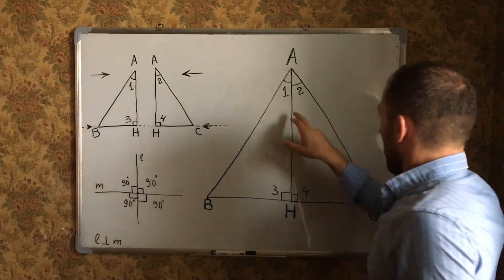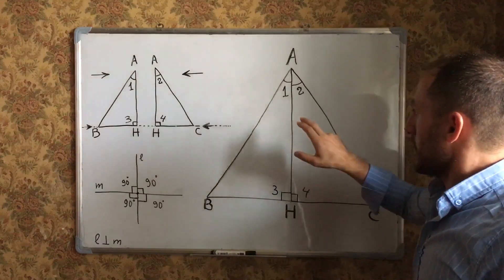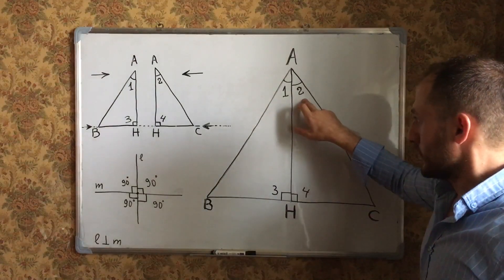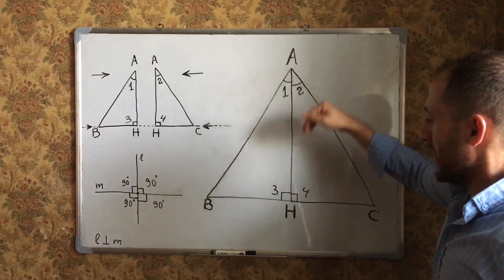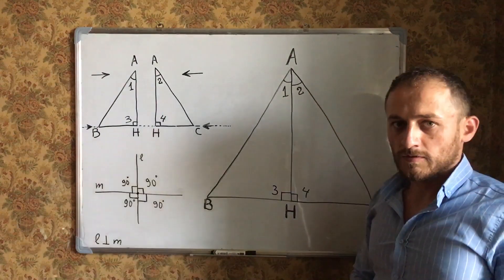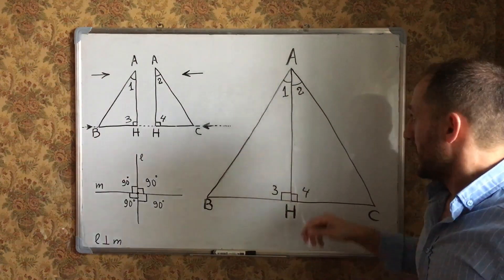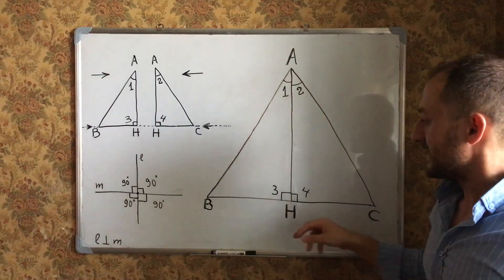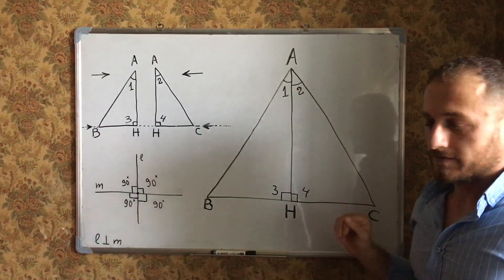Look, given angle 1 congruent to angle 2, and AH is an altitude. I shall prove triangle ABC is isosceles.